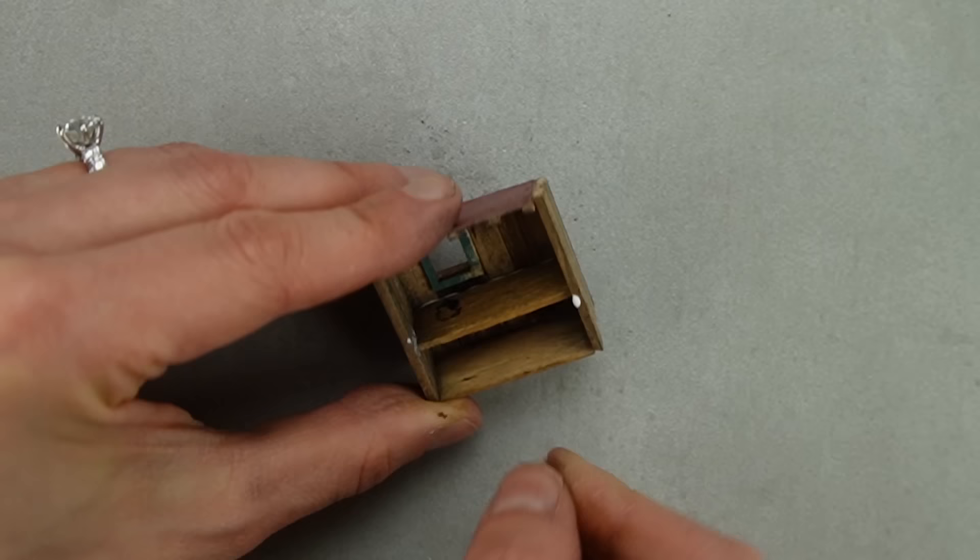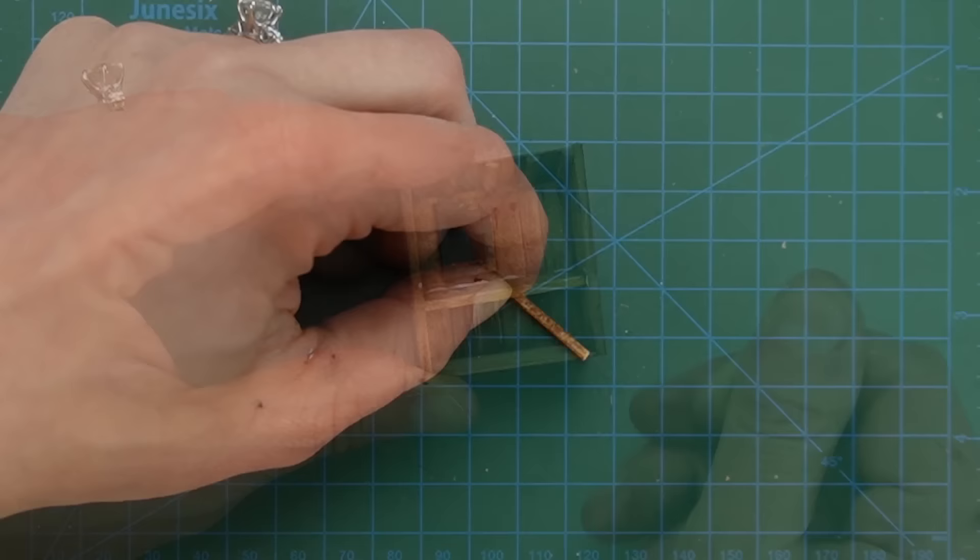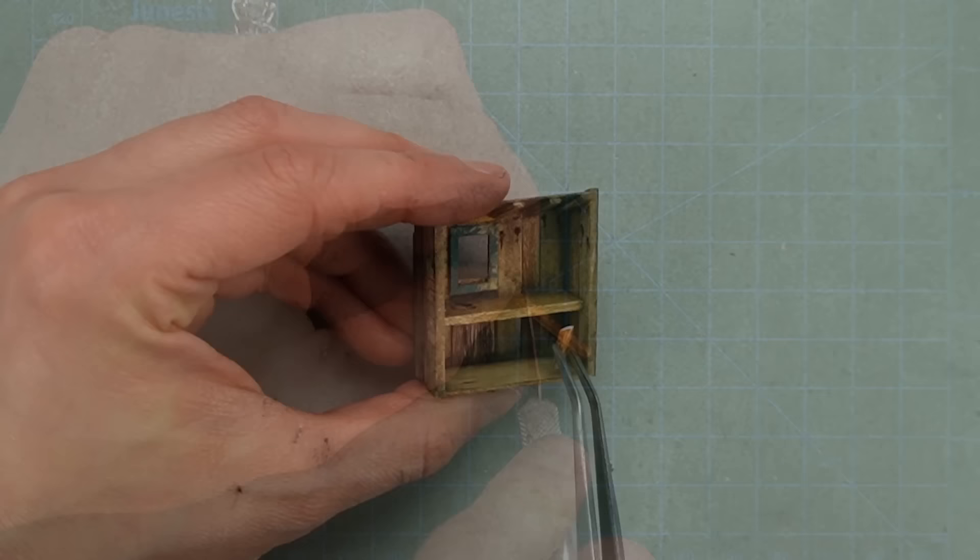This tabletop will be a great place to display some accessories, and it's making the shed a lot stronger. I stained some matchsticks and cut them at an angle to make it look like there are little brackets supporting the tabletop, since it won't have any legs.